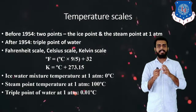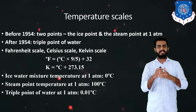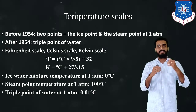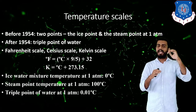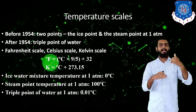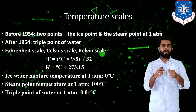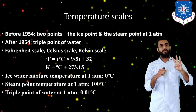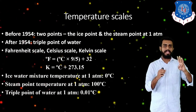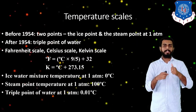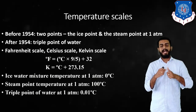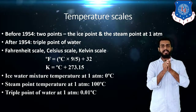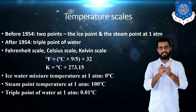Temperature scales: there are three kinds — Fahrenheit scale, Celsius scale, and Kelvin scale. Before 1954, two reference points were used: ice and steam at one atmosphere pressure. After 1954, the triple point was added as another reference point. The triple point for an ice-water mixture is 0.01 degree Celsius, where all three phases — solid, liquid, and gas — coexist simultaneously. Steam point at one atmosphere is 100 degree Celsius, and the ice-water mixture point is 0.00 degree Celsius. Conversion formulas between Fahrenheit, Celsius, and Kelvin are provided.